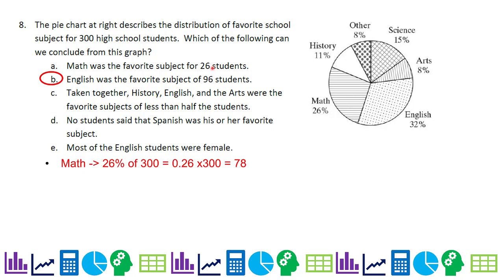English, if you do the math there, English is 32% of 300. That does work out to 96. We'll go ahead and check out the others.